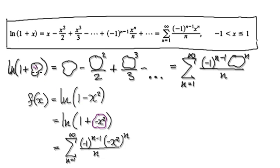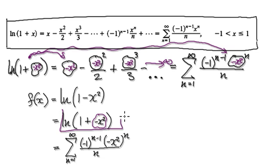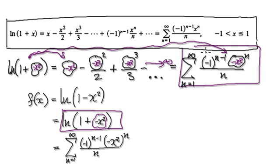So negative x squared goes into here. What that means is it will translate to minus x squared, minus x squared, minus x squared and so on all the way to infinity. And then this thing here will be minus x squared. So this thing here can be represented by this, and that will then take us to here.